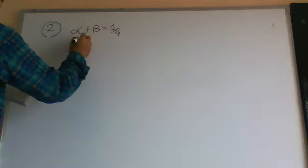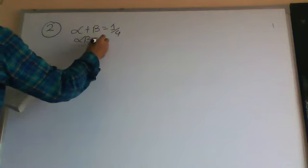Hello students, today we are going to see Exercise 2.2, Question Number 2. We have seen 2.2 Question 1 already in some previous videos. Now Question 2 is: find a quadratic polynomial with the given numbers as the sum and product of its zeros respectively. Given the sum and product of the zeros, we have to find the quadratic polynomial. For the first one, sum is 1/4 and product is -1.